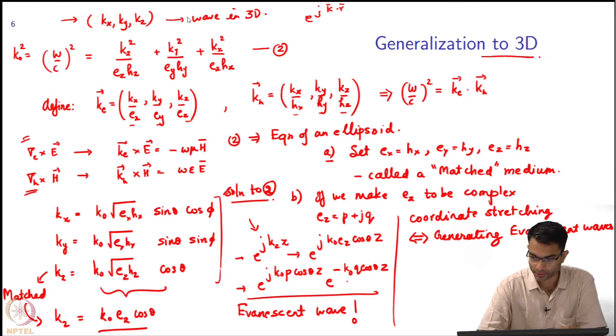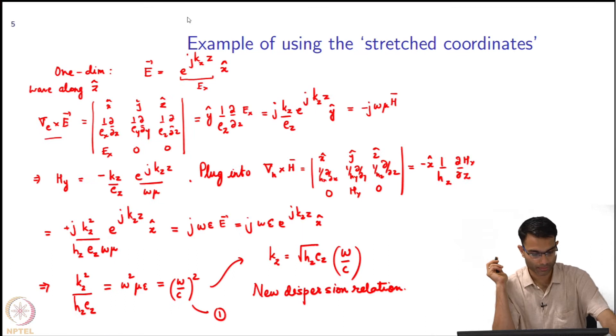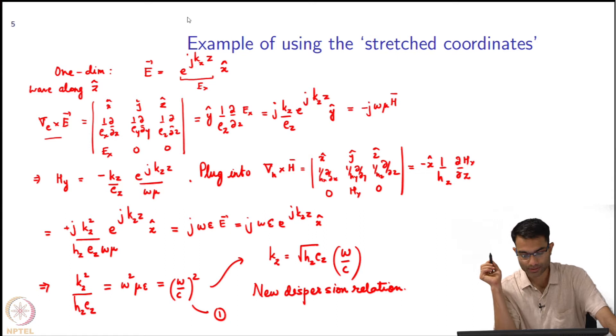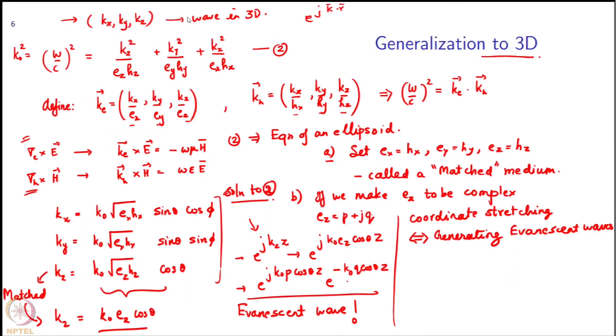We continue with our development of the PML. The concept to keep in mind is that coordinate stretching is mathematically the same as generating an anisotropic medium, which absorbs. The key idea is we have generalized the del E and del H operator to now have 1 by Ex, 1 by Ey, 1 by Ez terms, similarly for H. As a result, I got a new dispersion relation and Maxwell's equations got redefined a little bit. When I put Ex, Ey, Ez all equal to 1, I get back vacuum.